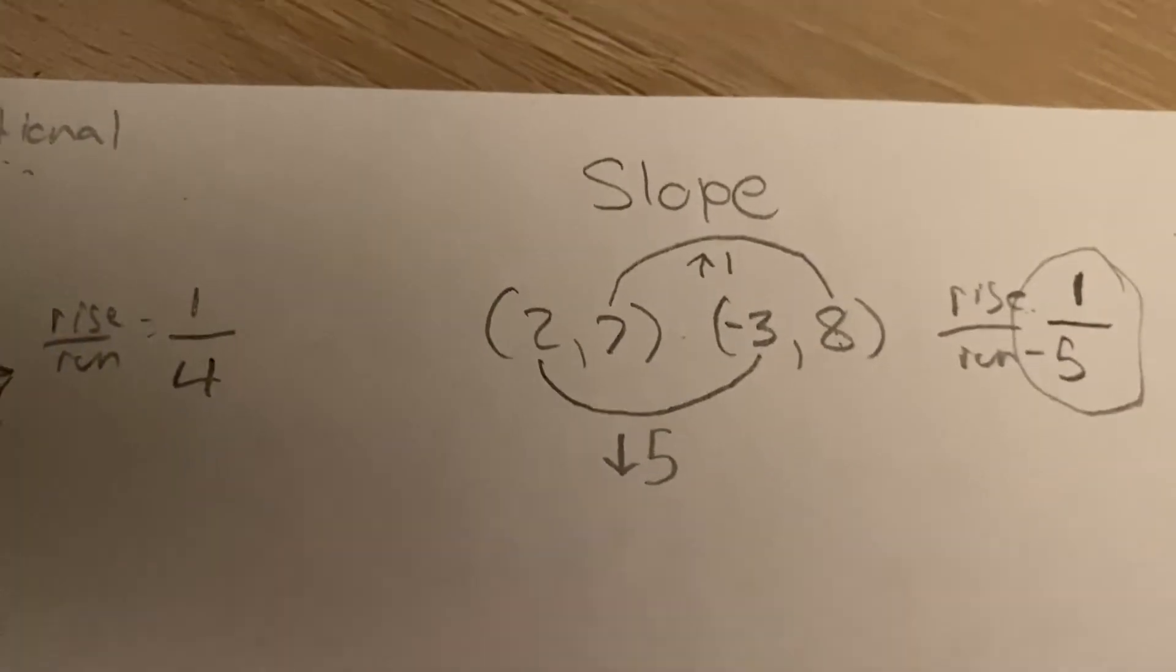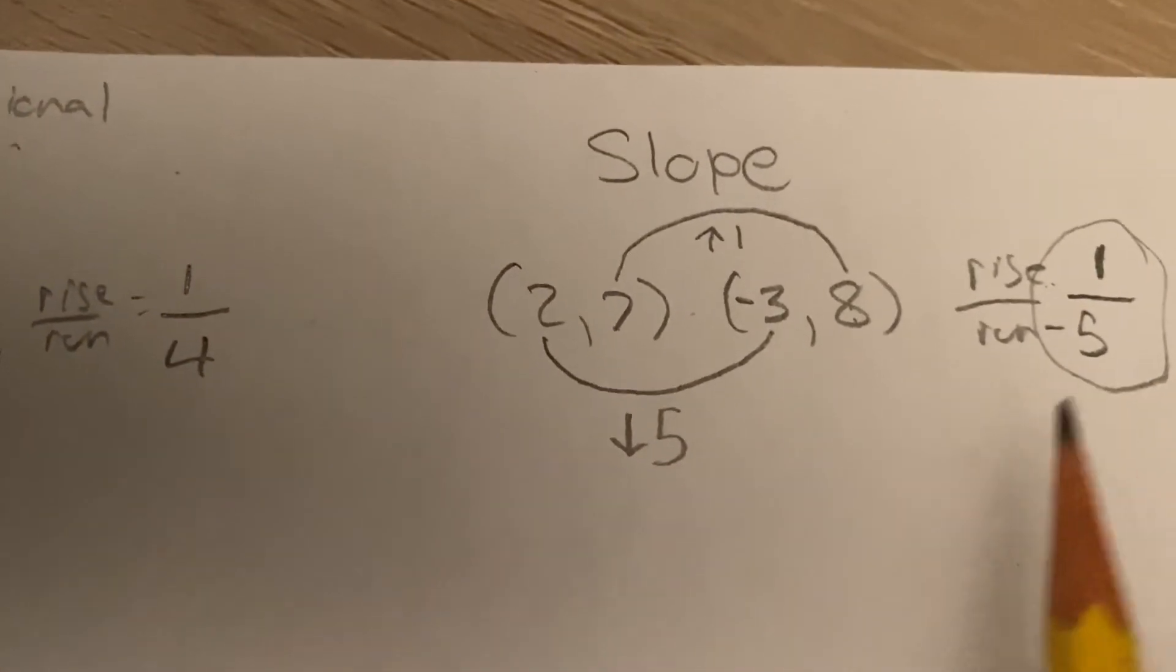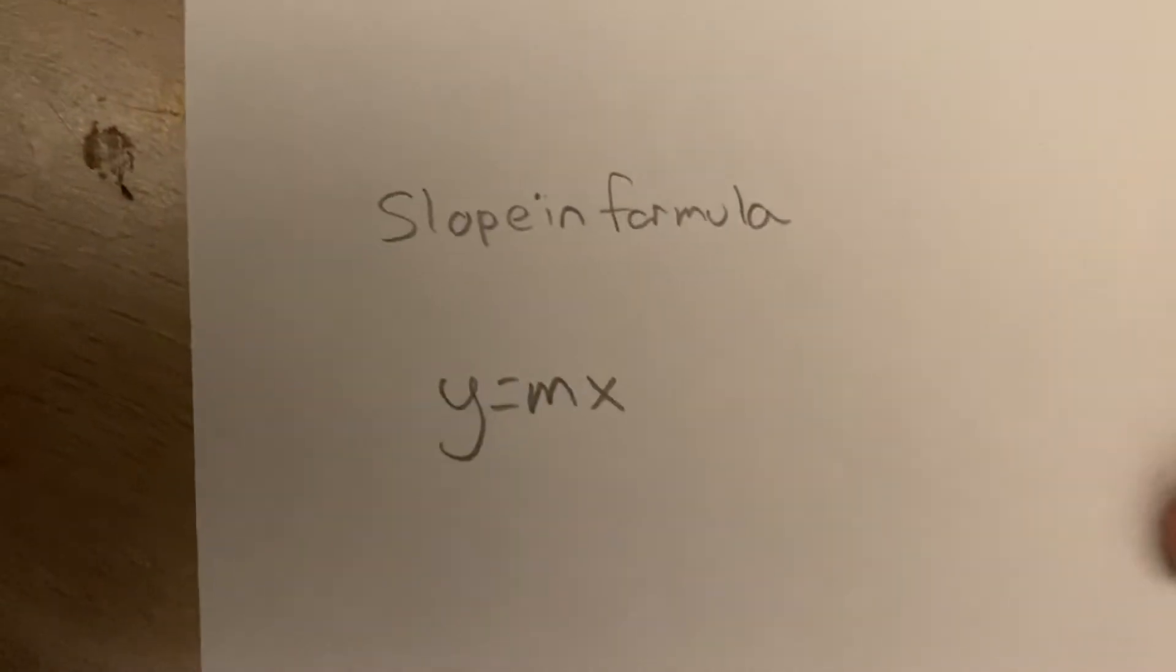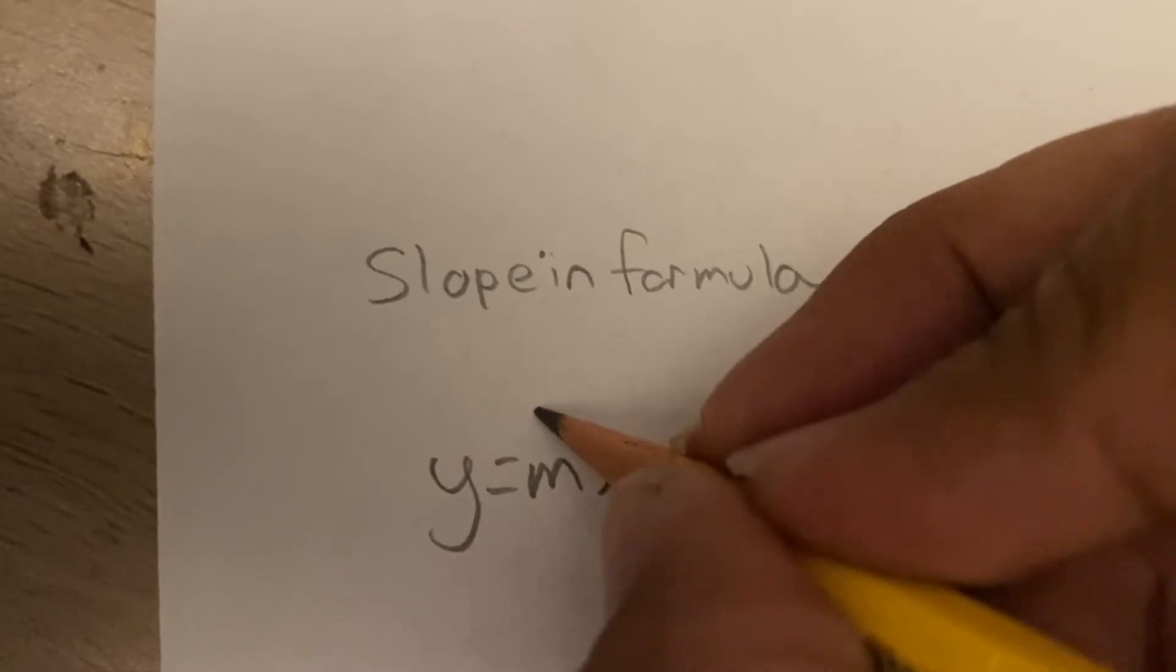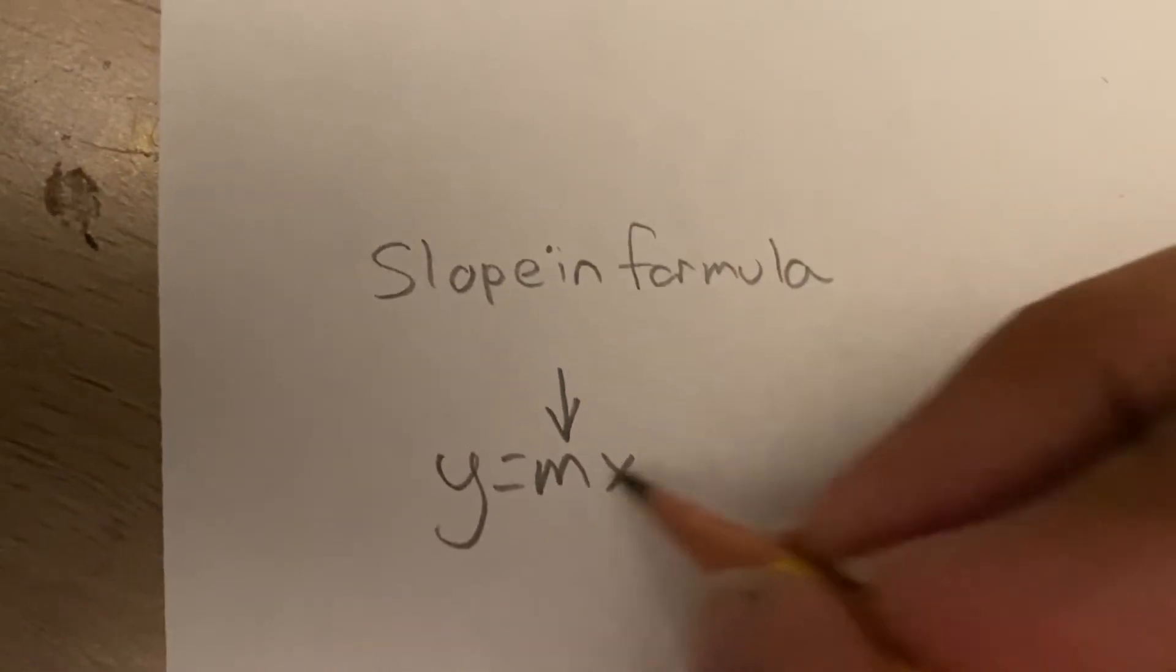Now, what if I wanted you to put this proportional graph into a slope formula, which is right here. This is a proportional formula. Slope goes right there, right in front of the x.